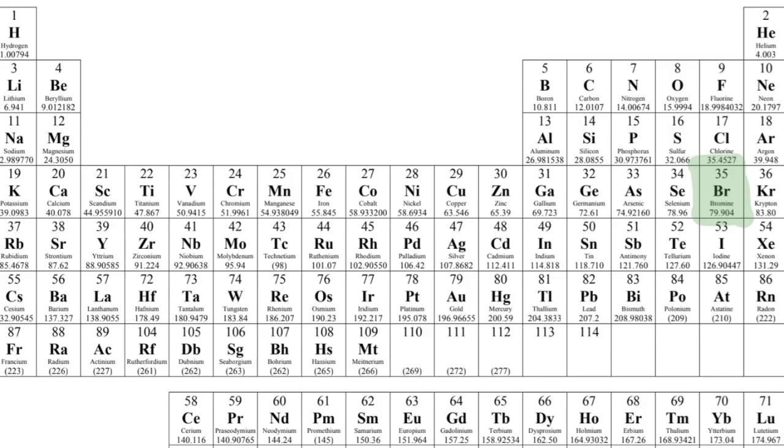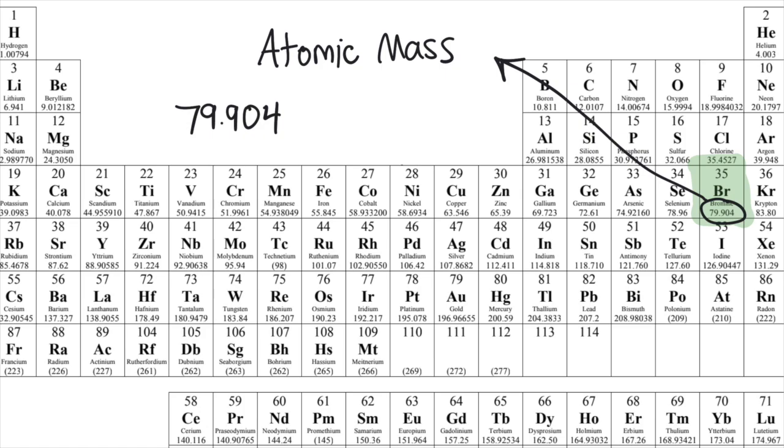Finally we need to figure out the number of neutrons. We can look at the other number here at the bottom of the square. This is called the atomic mass. It's the average mass of all the different isotopes of bromine. Each isotope has a different number of neutrons.